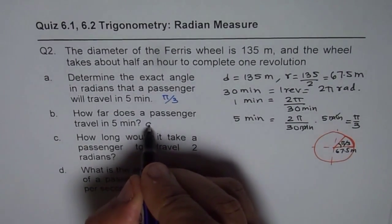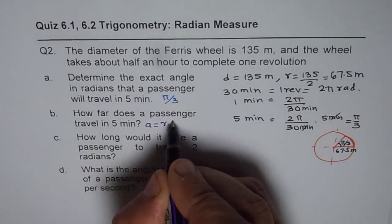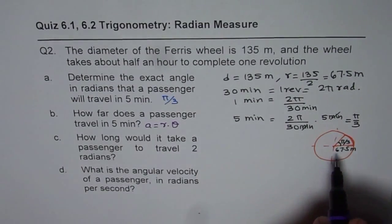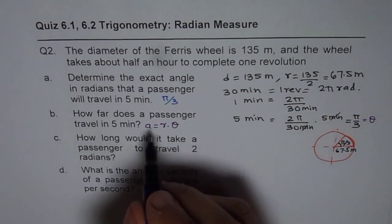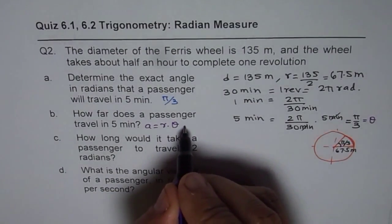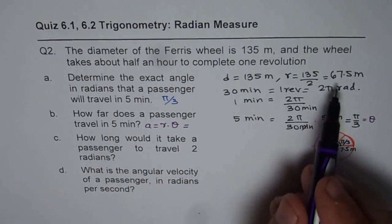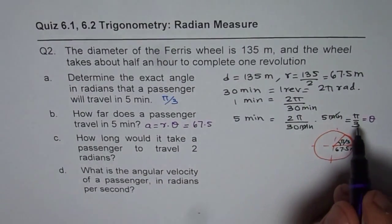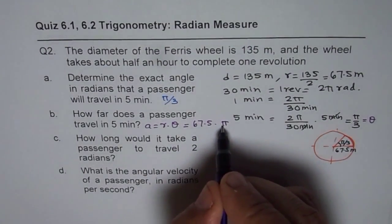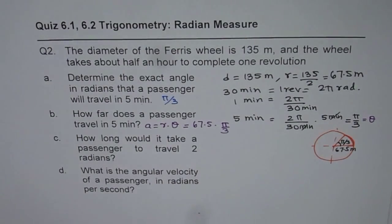So this we can calculate as A equals to R times θ, where θ is π by 3. So let's find arc length which equals to radius of 67.5 times π by 3.